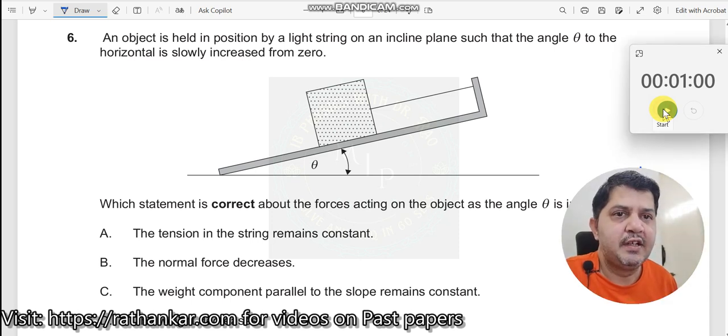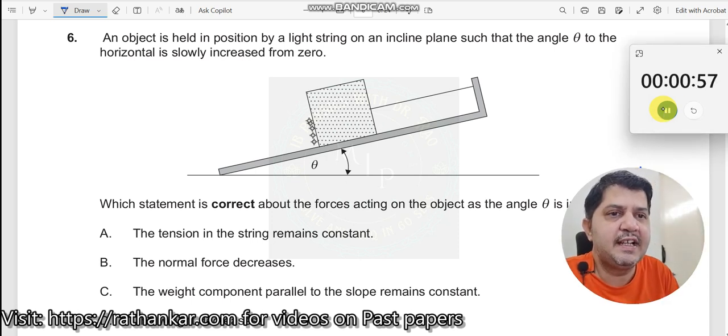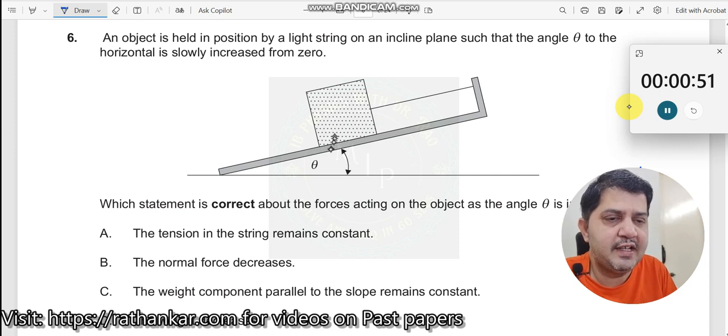Question number six: An object is held in position by a light string on an inclined plane. The inclined plane is such that the angle theta to the horizontal is slowly increased from zero. So the value of theta is increasing.